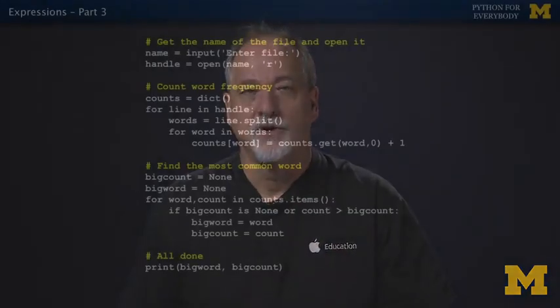So here is our word frequency that we keep coming back to. And what I've added here is I've added four comments. I've added comments that basically help us understand what's going on. And remember, I call these like paragraphs. Our first paragraph has human readable text: Get the name of the file and open it.